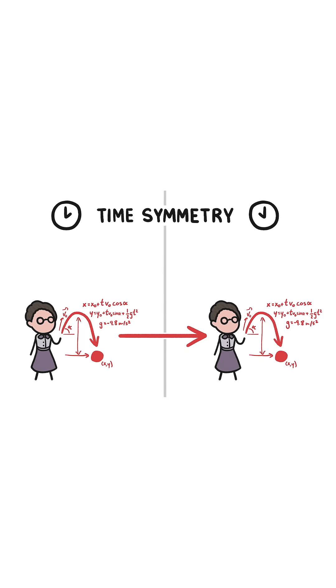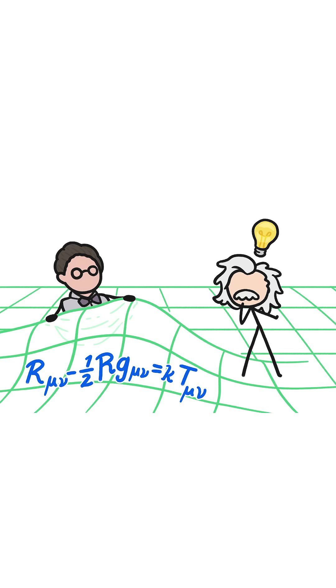For example, symmetry in time. The fact that the laws of physics don't change from one day to the next is the reason that energy is conserved. This helped Einstein finally resolve a seeming contradiction in his general relativity theory,